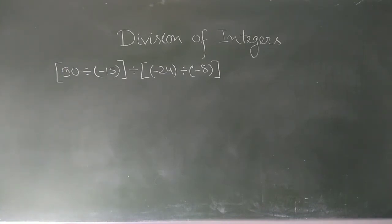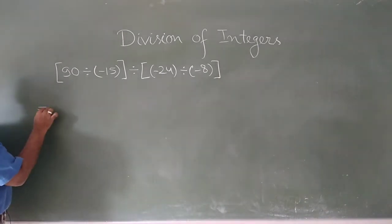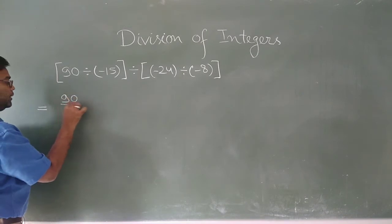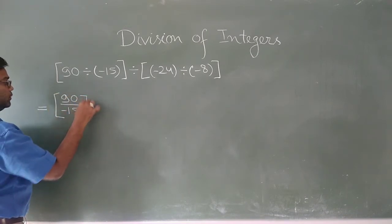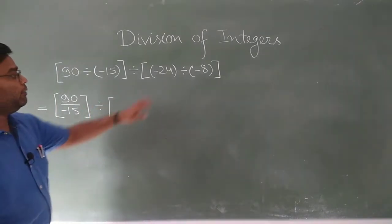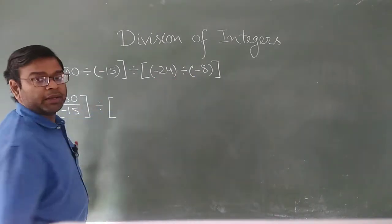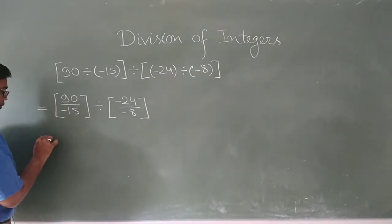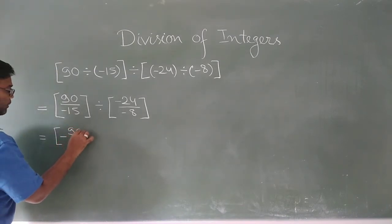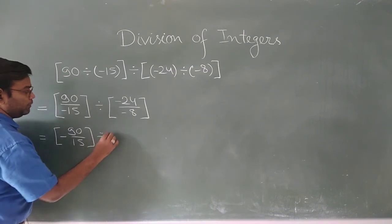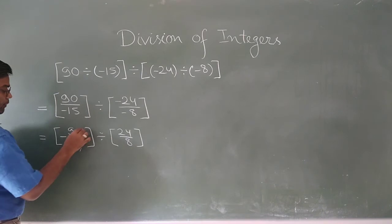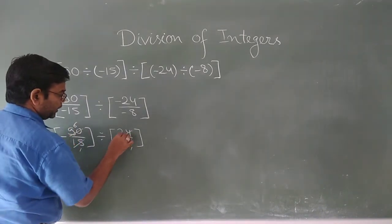Now a slightly complex question involving multiple divisions. We have the expression: 90 divided by minus 15, then divide the result by minus 24 divided by minus 8. For the first part, positive divided by negative gives negative: minus 90 over 15 equals minus 6. For the second part, negative divided by negative gives positive: 24 over 8 equals 3.